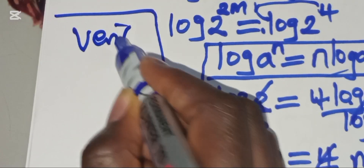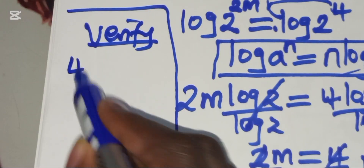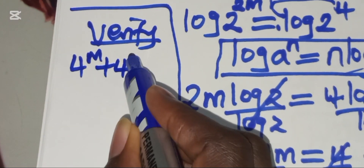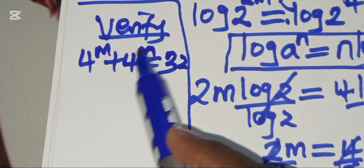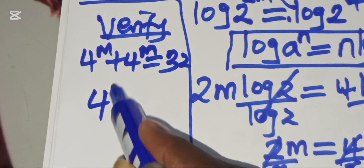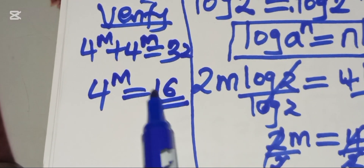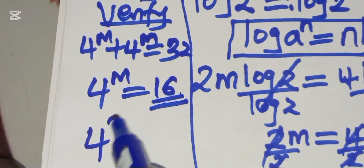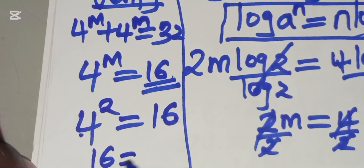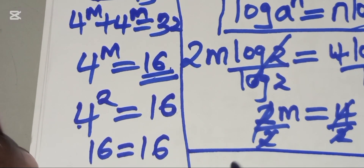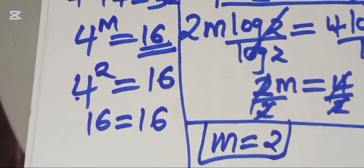Let's verify that m equals 2 satisfies the original equation. Recall that 4^m plus 4^m equals 32 simplifies to 4^m equals 16. Substituting m equals 2: 4 raised to the power 2, or 4 squared, equals 16, which equals 16. This confirms that m equals 2 is correct. Thank you for watching, and kindly subscribe.